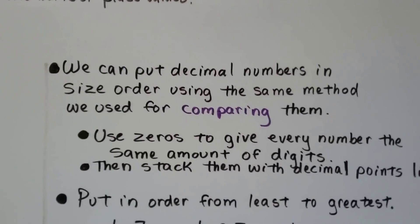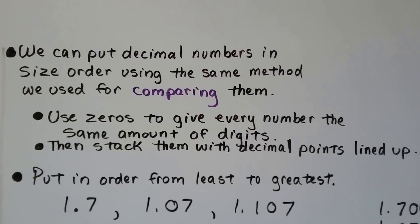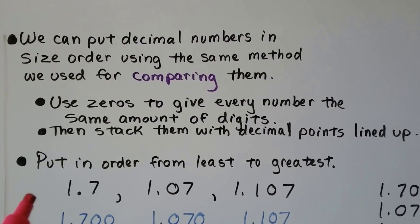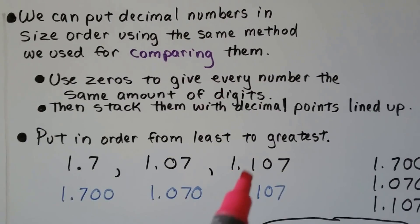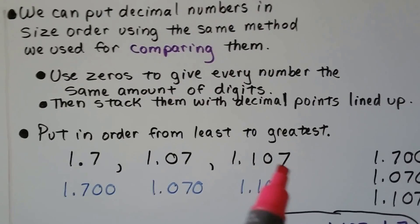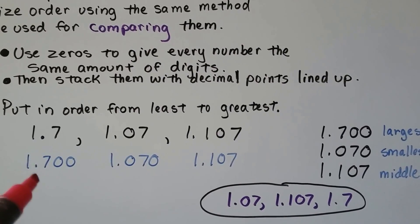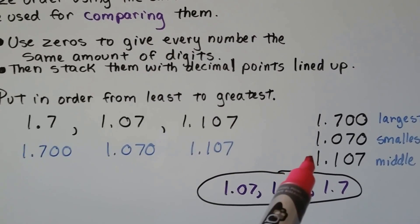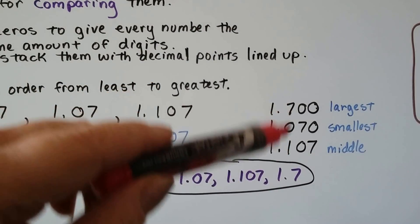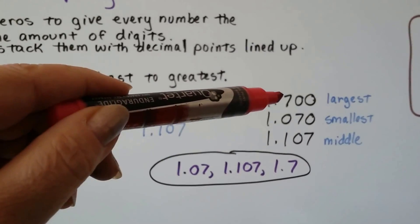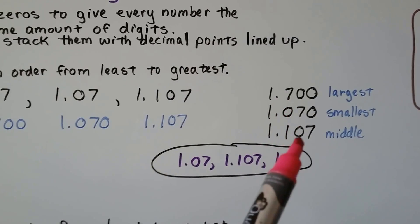We can put decimal numbers in size order using that same method we use for comparing them. We use zeros to give every number the same amount of digits, and we can stack them with decimal points lined up so we can see them more clearly. If it says to put in order from least to greatest, and we have 1 and 7 tenths, 1 and 7 hundredths, and 1 and 107 thousandths — since the most digits to the right is three — we add zeros so each has three digits: 1.700, 1.070, and 1.107. With the decimal points lined up, we can see the largest has a 7, the smallest has a 0, and the middle has a 1. It's like comparing 700 to 70 to 107.